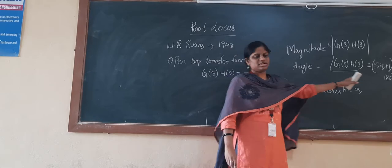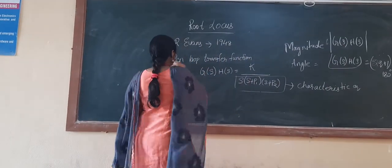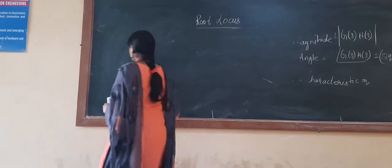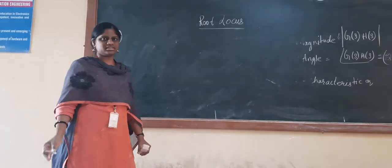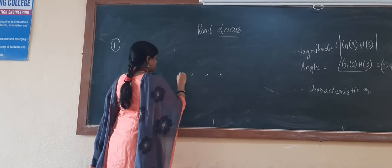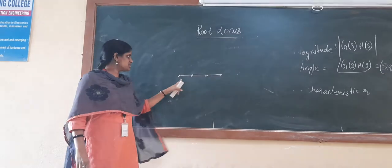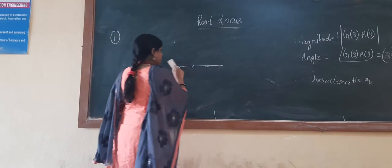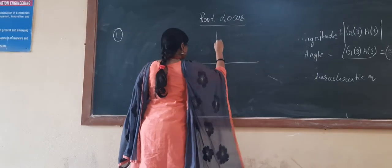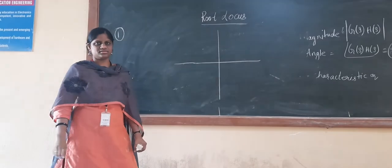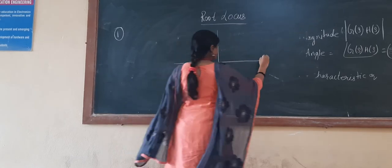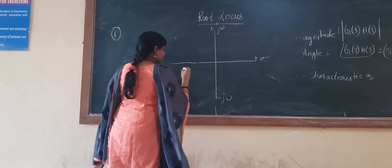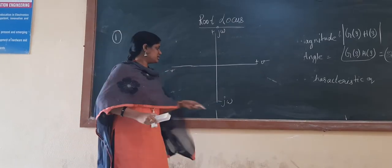For every transfer function, we need to find out the root locus. The locus is nothing but joining all the points into one — whatever points are present in your S-plane. The S-plane has a real axis and an imaginary axis, with coordinates: plus and minus j-omega, and plus and minus sigma.